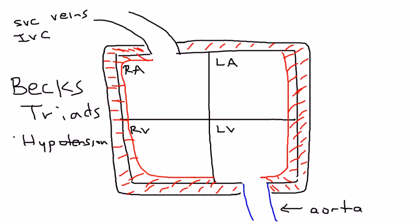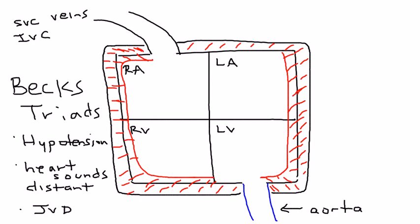The first component is hypotension — low blood pressure. The second is that the heart sounds will be distant or muffled. The third is jugular venous distension, meaning the neck veins will be distended. I'll explain why each of these happens.